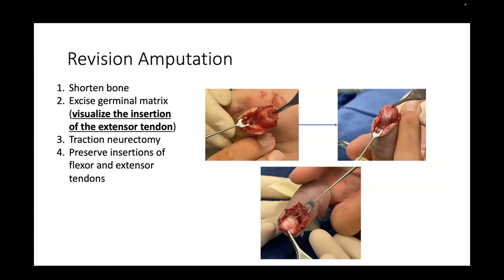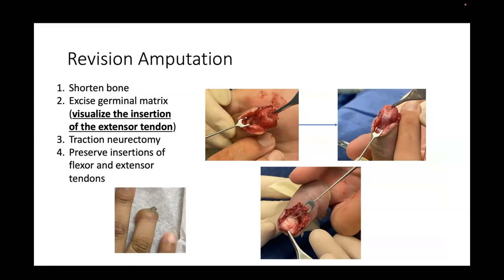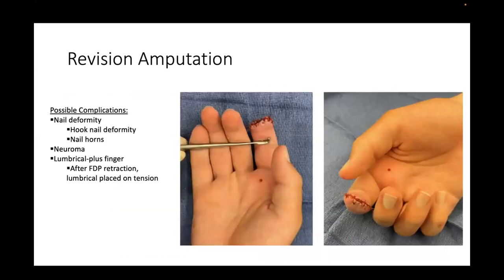For revision amputation, it's important to shorten the bone sufficiently and excise the germinal matrix. To do this you must visualize the insertion of the extensor tendon. Traction neurectomy goes without saying. Preserve to the best of your ability the insertions of the flexor and extensor tendons. With excising the germinal matrix, make sure you see the insertion of the extensor tendon to prevent nail horn development.